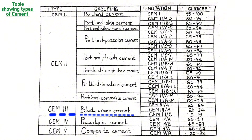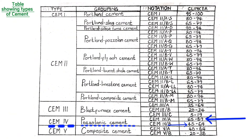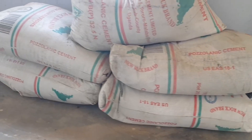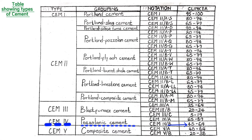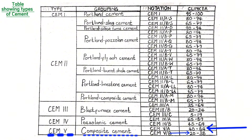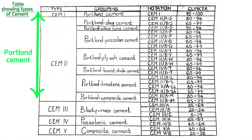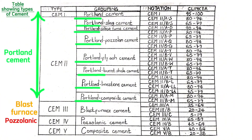Chem 3 is a blast furnace cement which has a clinker range of 5% to 64%. Chem 4, the pozzolanic cement, has 45% to 89% clinker depending on the category. Chem 5 is a composite cement having 20% to 64% clinker. In simple terms, Chem 1 and Chem 2 are Portland cements — the strongest among all other cements. Chem 3 cements are blast furnace cements, Chem 4 are pozzolanic cements, and Chem 5 are composite cements.